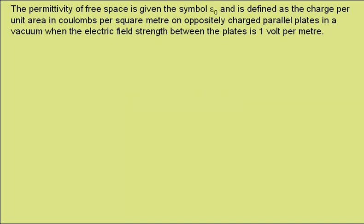Permittivity. The permittivity of free space is given the symbol epsilon 0 and is defined as the charge per unit area in coulombs per square metre on oppositely charged parallel plates in a vacuum when the electric field strength between the plates is 1 volt per metre.